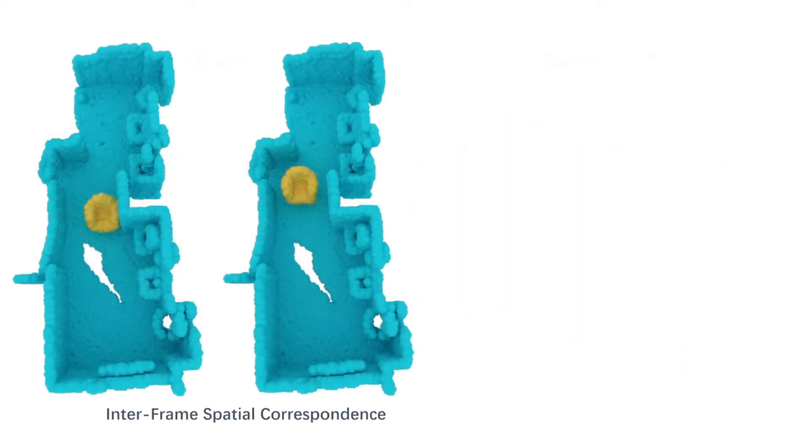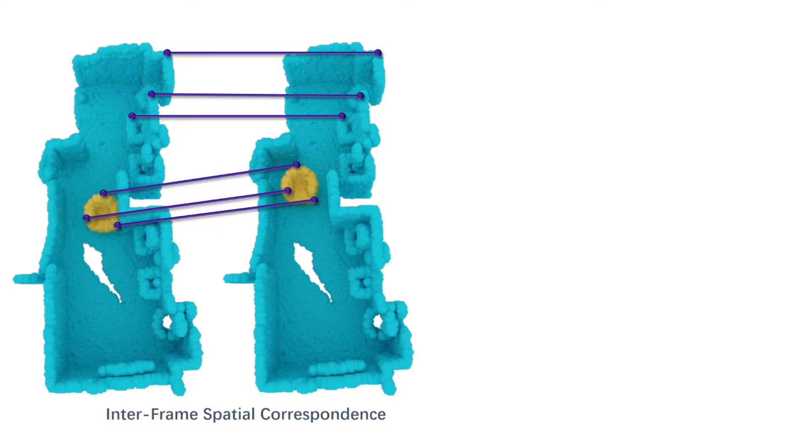For each pair of frames, we consider inter-frame spatial correspondence to constrain points corresponding to the same location of both the scene and the object in their feature space.